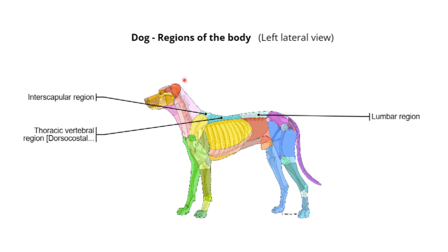Here we have the exact same thing on a whole animal, so it's easier to imagine. Again, the intrascapular region — the region between the two scapulas — is visible here; this is the scapula. We're looking at the animal from the left side, just as before, and on the right side we would have another scapula, making this region inter-scapular. Again, the thoracic vertebral region or dorsal costal region: every single one of the vertebrae are connected to the ribs, as you can see clearly here.